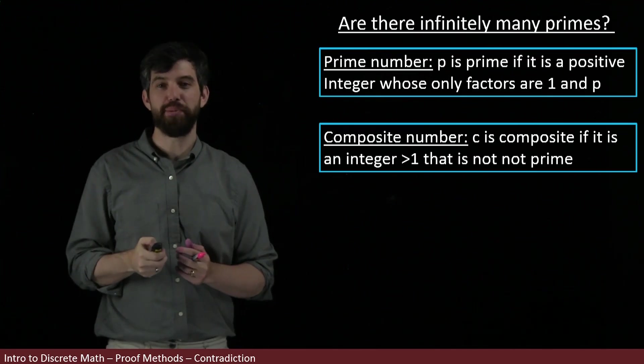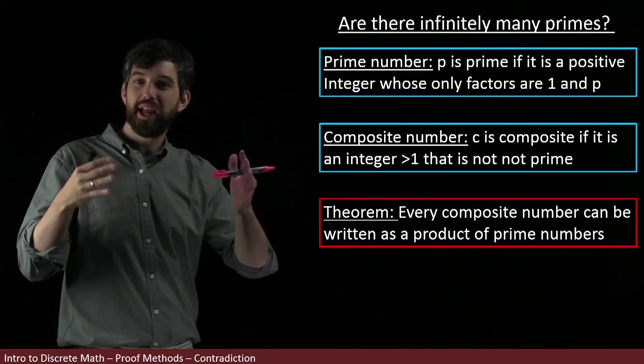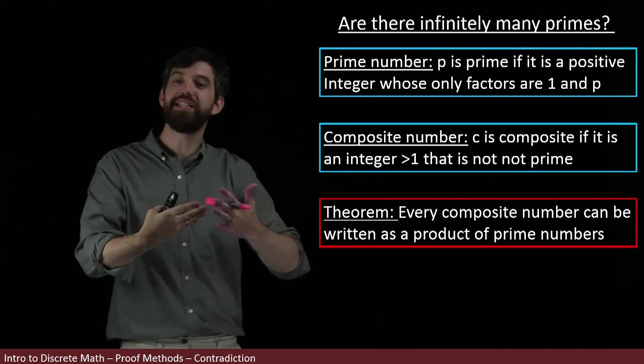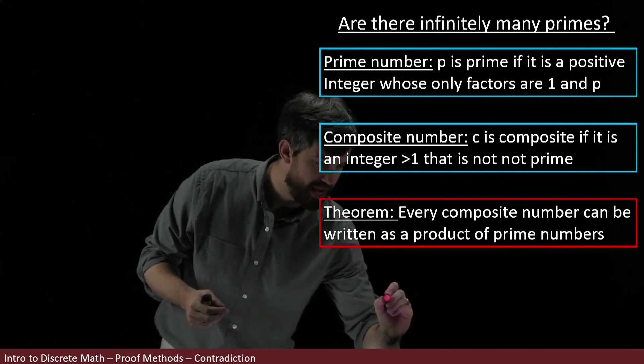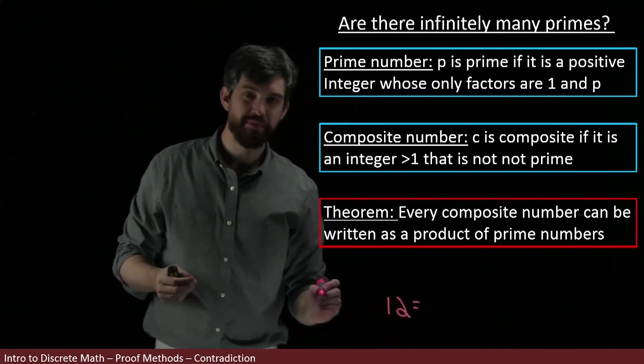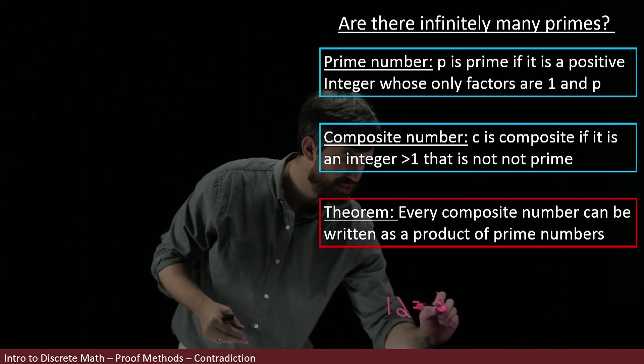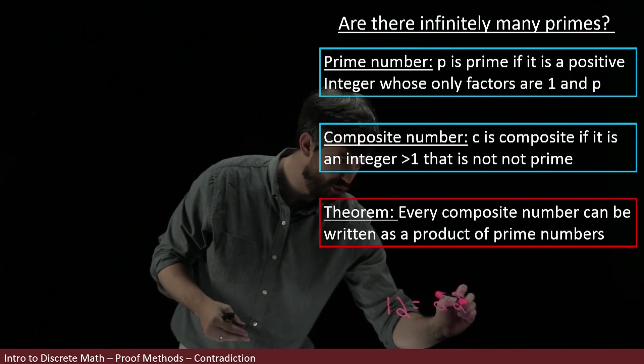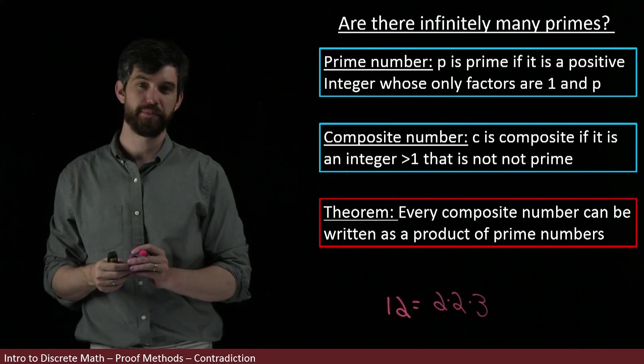I'll also note that we have a pleasing theorem: if you have a composite number, it can always be written as a product of prime numbers. For example, if I take 12, then 12 can be written as two times two times three.